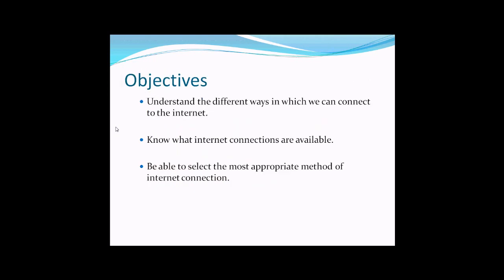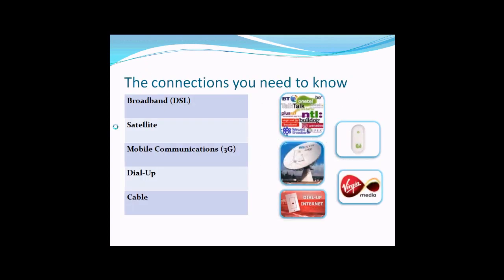To summarise what we've covered: broadband suits the average family — lots of providers, relatively cheap and fast, ranging from 2 meg up to 100 megabytes for intense home or business use. Satellite is for people who can't get broadband, at around £30 a month — relatively okay, but a bit jittery and stuttery online, so it's not really good for gaming.